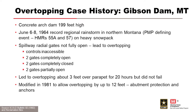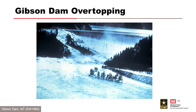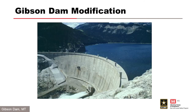Notice the right abutment overflow — that is insane. That's the dam overtopping. This dam was modified in 1981 to allow overtopping by up to 12 feet. Abutment protection and anchors were added. Notice the concrete apron placement on the right abutment. If you'd like to read more, you can find the details in ICOLD Bulletin 82 on spillways from 1992.